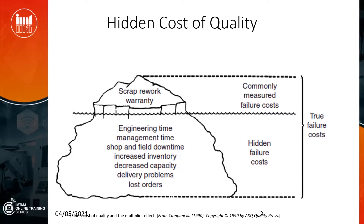And in turn, it reduces your capacity to manufacture what you can actually sell. Also, if there are sudden scrap or rework issues, then there could be delivery problems — you may not be able to meet deadlines. And if that becomes too much at the customer's end, you might even lose business. So there is a lot of hidden cost of failure which is unnoticed and uncounted, but we only measure scrap, rework, and warranty.